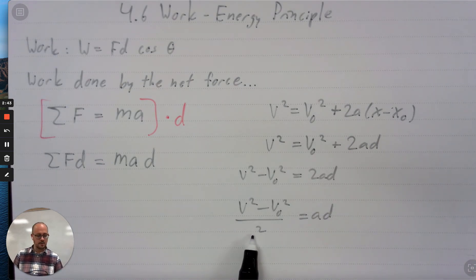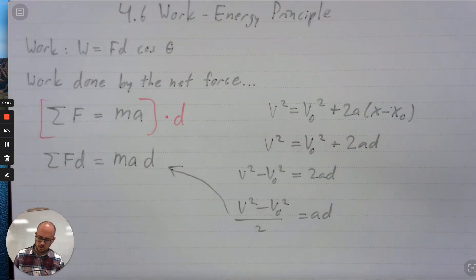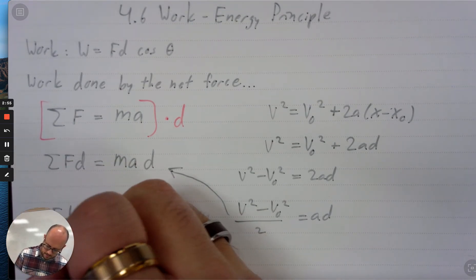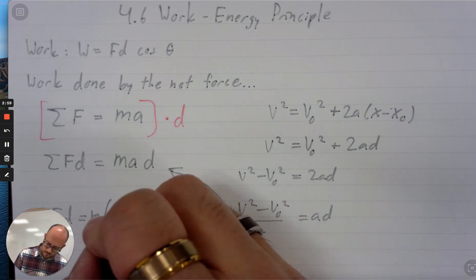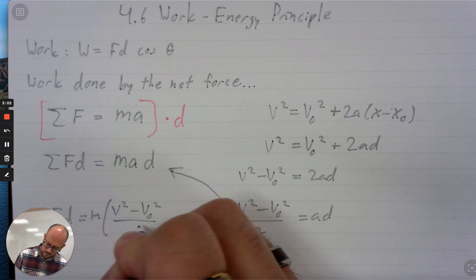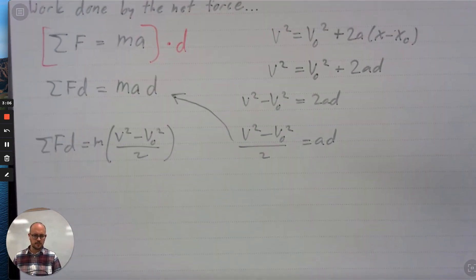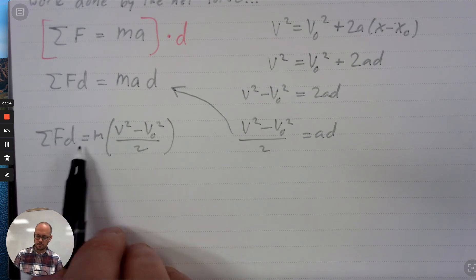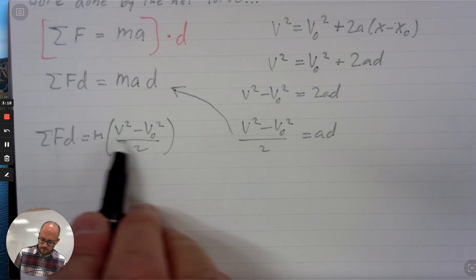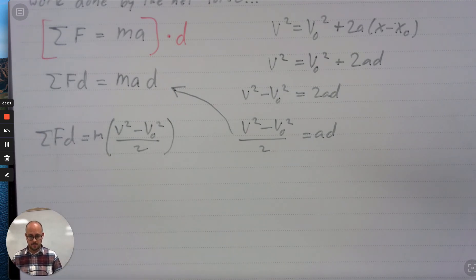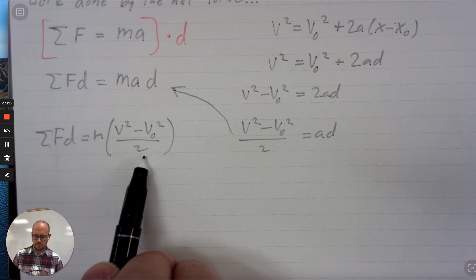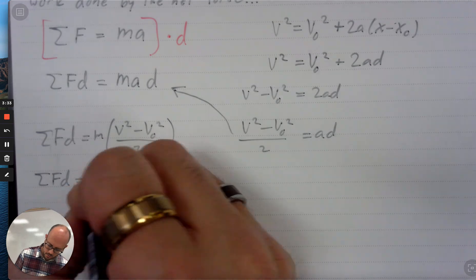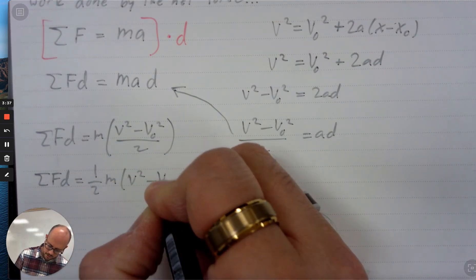So because this expression is equal to ad, I'm going to now substitute it into my equation that has net force. So I get net force times distance equals mass times v squared minus v naught squared over two. And so the use of this equation you are about to see. What I can do is I can move this two in the denominator out front. So I get, instead of everything over two, I get one half in the front. I can also distribute the two and the m to these two things.